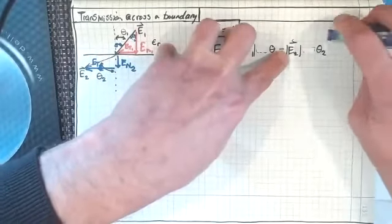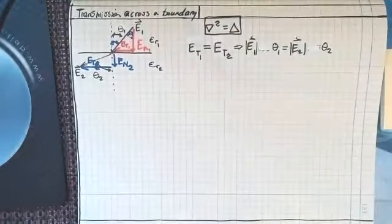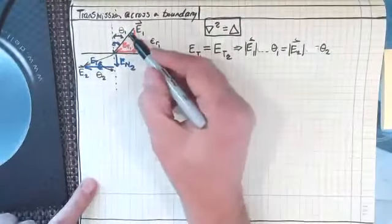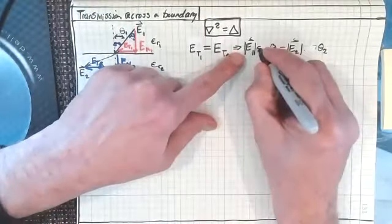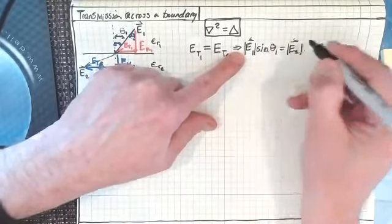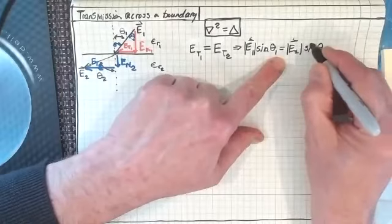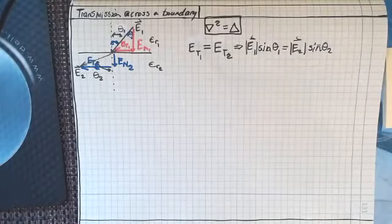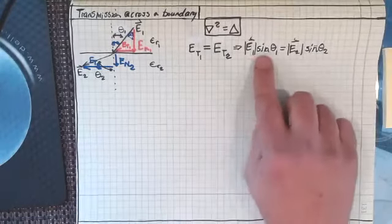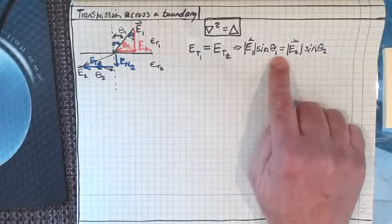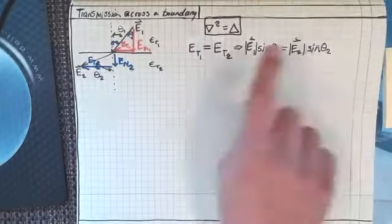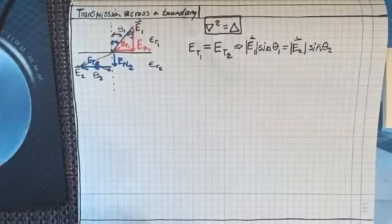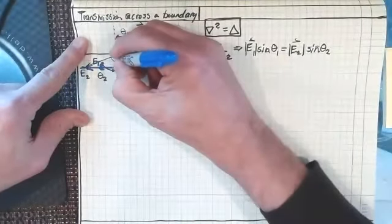Sorry — I was already up to the flux in my head and in my notes. Of course that's not cosine, it's sine. E1 sine theta one equals E2 sine theta two, because here is theta two right there.